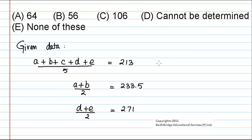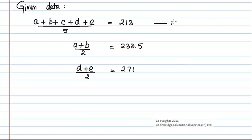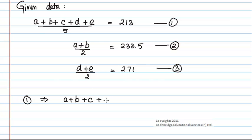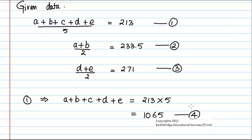Now with this given data we have to find the third number. Let us label these as equations 1, 2, and 3. From equation 1 we can write A plus B plus C plus D plus E is equal to 213 multiplied by 5. Let us consider this as equation number 4.